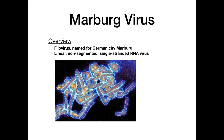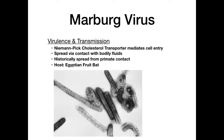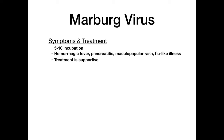Marburg virus is a filovirus named for the German city where it was originally discovered. It is a linear, non-segmented, single-stranded RNA virus. It uses a Niemann-Pick cholesterol transporter to mediate cell entry and is spread through contact with bodily fluids. Historically it spread from contact with primates, and the host is thought to be the Egyptian fruit bat. It has an incubation period of 5–10 days, after which it causes a protracted hemorrhagic fever with pancreatitis, a maculopapular rash, and flu-like symptoms. Treatment is supportive only, with a very high mortality rate.